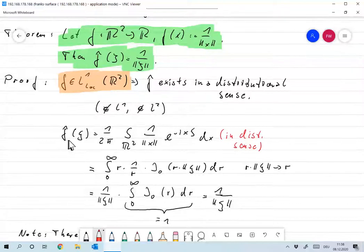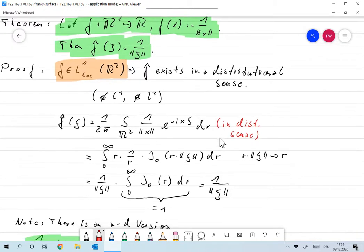Okay, so I formally write down the definition of the Fourier transform. So that's 1 over 2 pi integral over R2, 1 over norm X, e to the minus iX xi dx. I say formally because that, of course, doesn't exist in a classical sense, but it exists in distributional sense because everything is in L1 log. So I won't have to care about that.